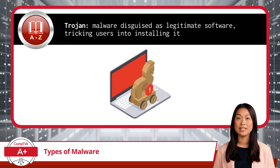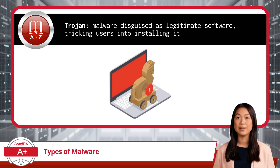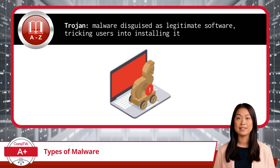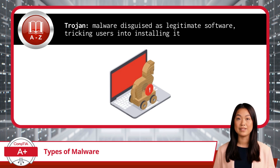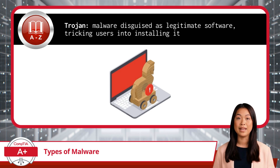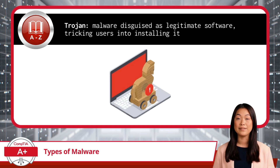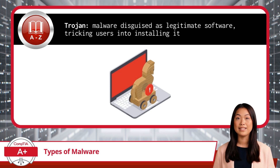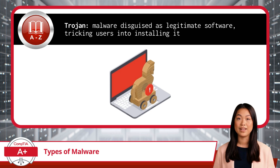Next, we have a Trojan. A Trojan is malware disguised as legitimate software, tricking users into installing it. Unlike a virus, it doesn't replicate itself, but rather uses deception to sneak into your system. Once it's inside, it can open backdoors for other malware, steal data, or even take control of the infected device. It's like downloading what you think is an awesome game, only to find out it's secretly letting hackers rummage through your files.